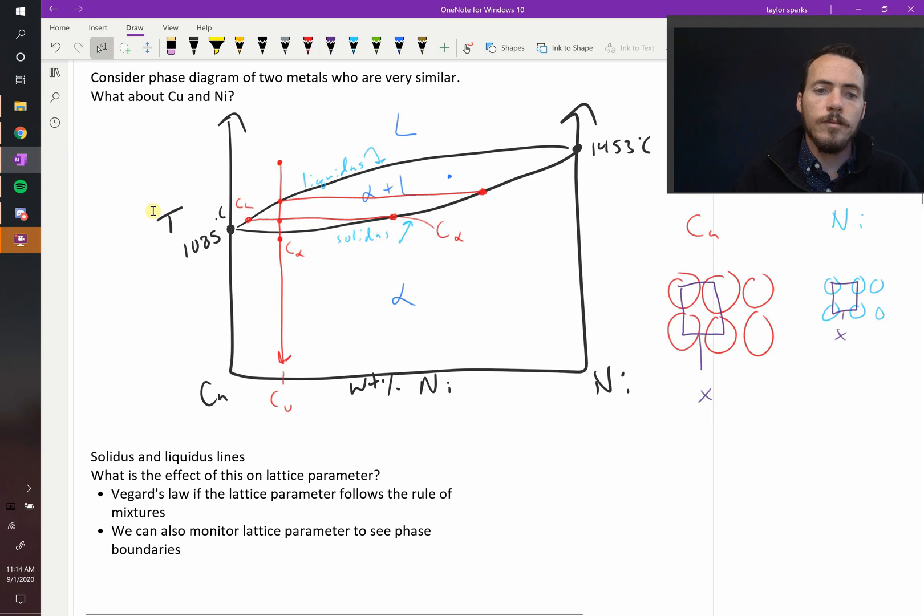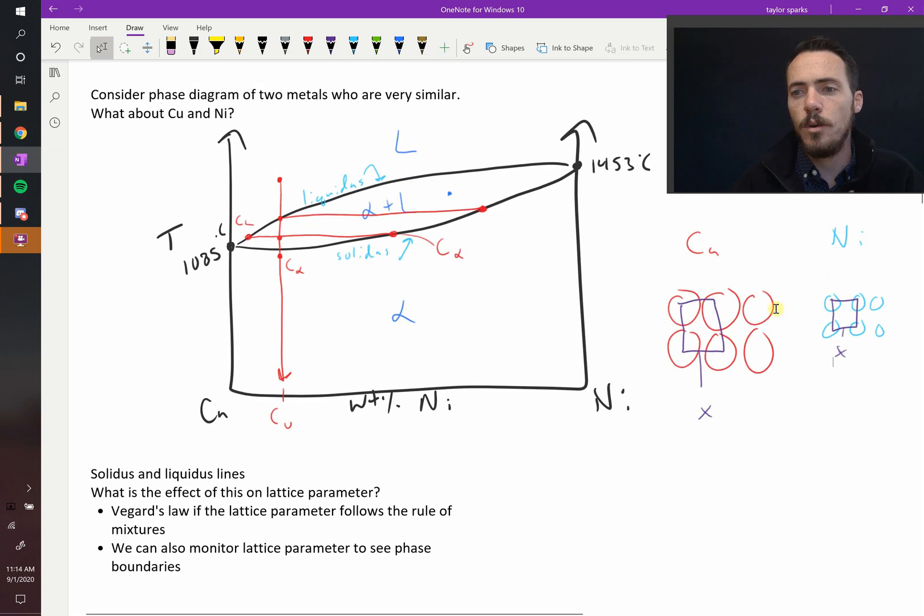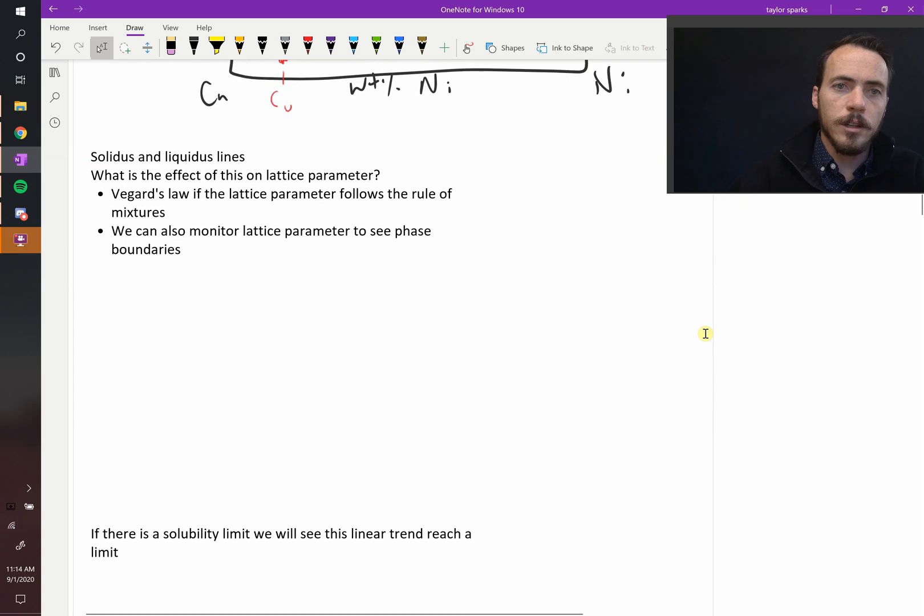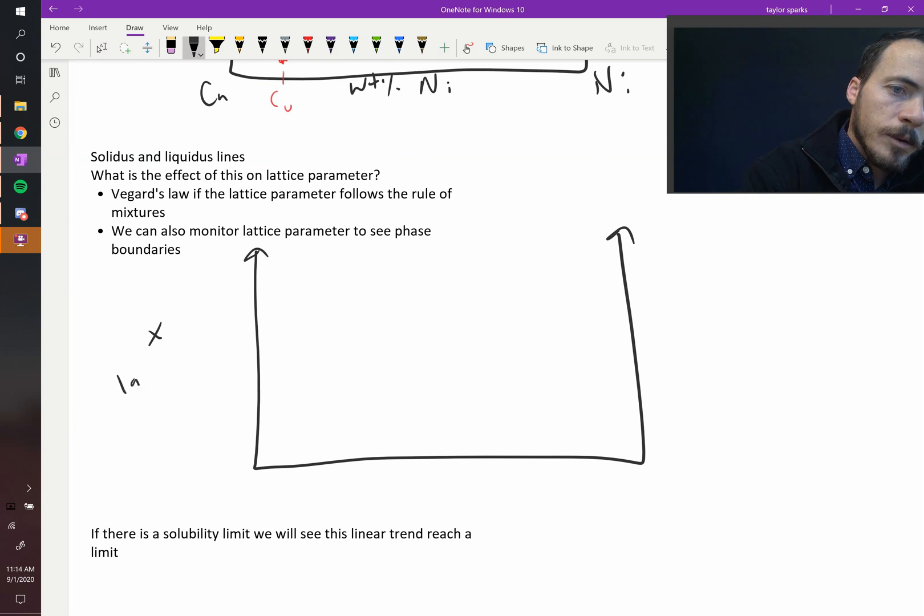So what you can often do is you can plot this so-called lattice parameter, this edge length of the unit cell, to see when you have a change in your phases that are present. So in this instance, what would it look like? For copper and nickel, if you plotted the lattice parameter, so we'll call this x, our lattice parameter, and you plotted it as a function of weight percent nickel.